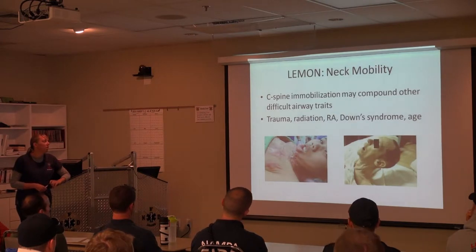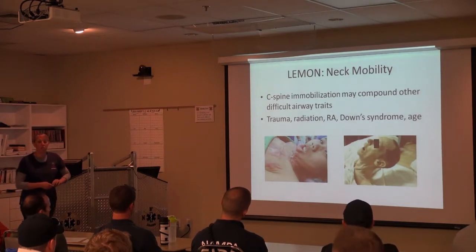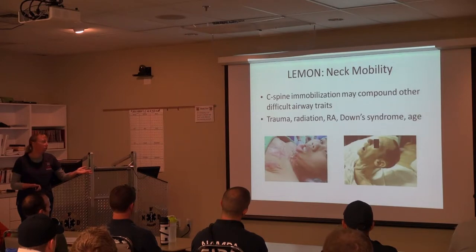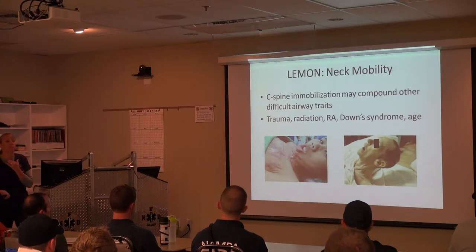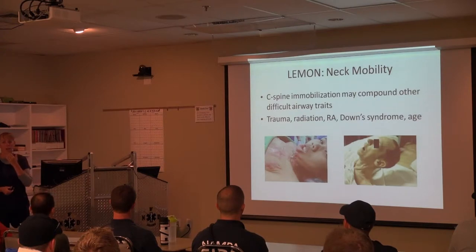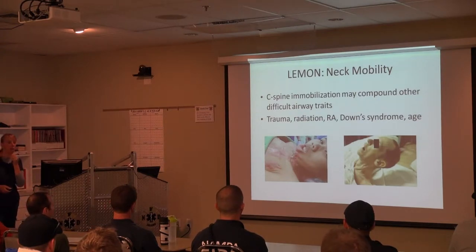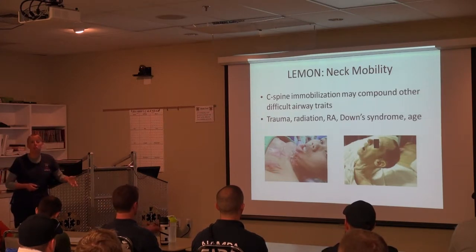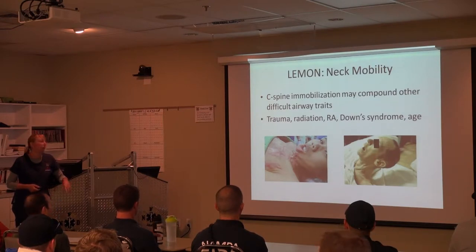Neck mobility — we encounter C-spine immobilization as a challenge all the time. Radiation gives a fixed flexion of the spine so you're unable to extend the neck for good visualization. Rheumatoid arthritis and Down syndrome have instability of C1, so you have to be careful. As people become kyphotic, they're really difficult to position — you have to ramp them up and use pillows, towels, and support to get their airway in the right position.